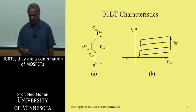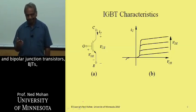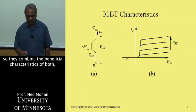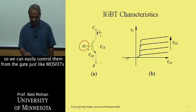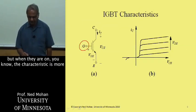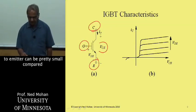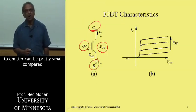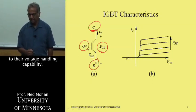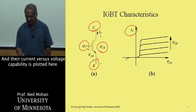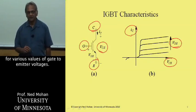IGBTs are a combination of MOSFETs and bipolar junction transistors (BJTs), combining the beneficial characteristics of both. We can easily control them from the gate just like MOSFETs, but when they are on, the characteristic is more like a BJT. The drop across the collector to emitter can be pretty small compared to their voltage handling capability. Their current versus voltage capability is plotted here for various values of gate-to-emitter voltages.